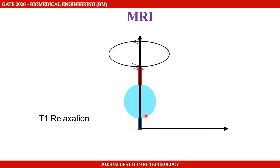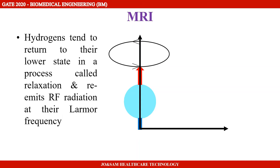Once the RF excitation is complete, the protons on the transverse axis will return to the longitudinal axis. The time for this return is called T1 relaxation. When a hydrogen atom is excited and the excitation is complete, it returns to a lower energy state, and that return time is measured.